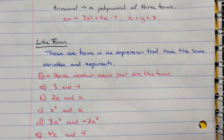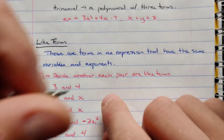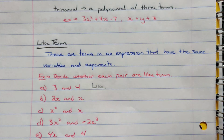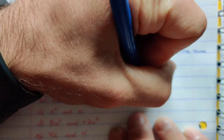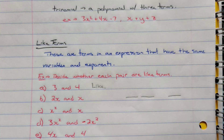Let's decide whether each pair are like terms. First: 3 and 4 — they don't have a variable, so the variable part is the same (there isn't one), making these like terms. Next: 2x and x — ignoring the coefficients, both have x to the power of 1. We can visualize these as lines, so these are like terms.